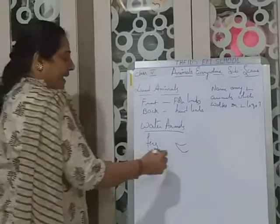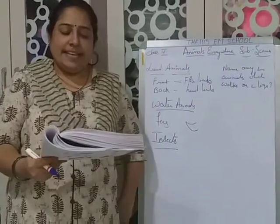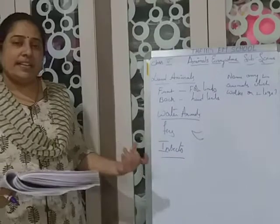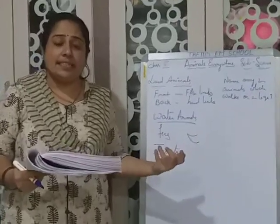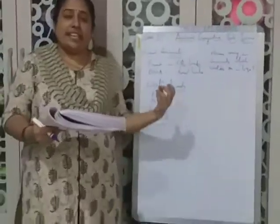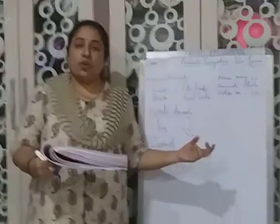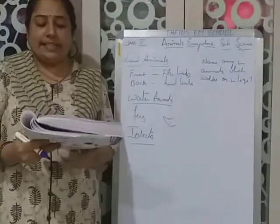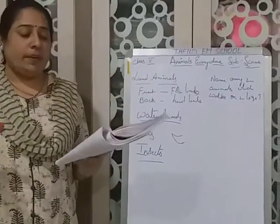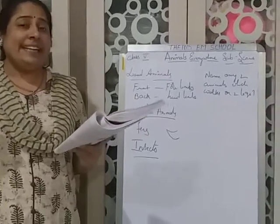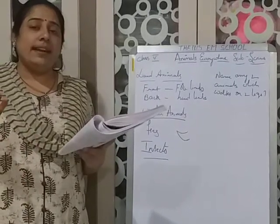Next, coming to insects. These are six-legged creatures. Insects have six legs and use their legs for movement. Insects like ants or cockroaches crawl on their legs. A grasshopper uses its long hind legs for jumping. Water insects like water boatmen use their legs as oars for swimming.